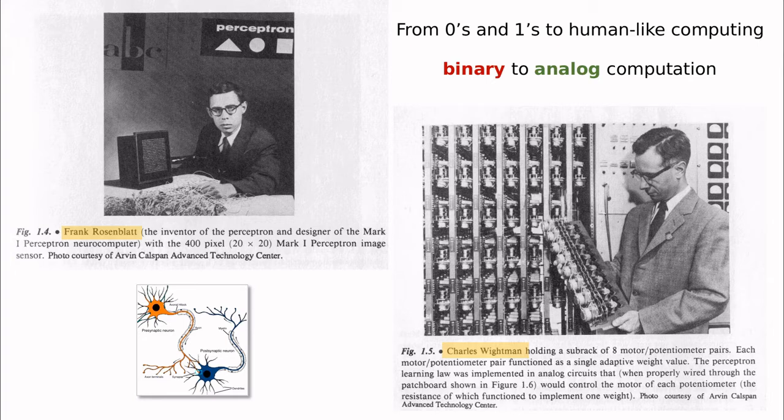We have to translate binary codes into analog computation, in which neurons should be adding electricity, which is a continuous variable, and producing an output, which is more like a 0 and a 1.